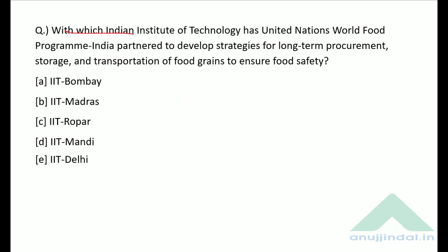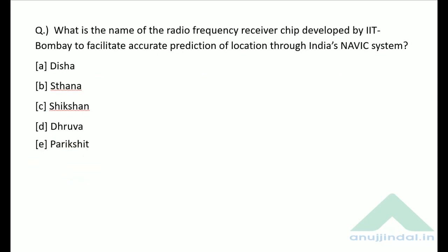With which IIT has the United Nations World Food Programme India partnered to develop strategies for long-term procurement, storage and transportation of food grains to ensure food safety? The correct answer is option E — IIT Delhi.